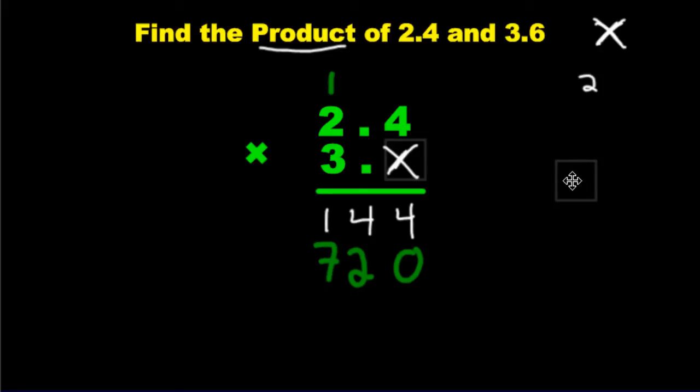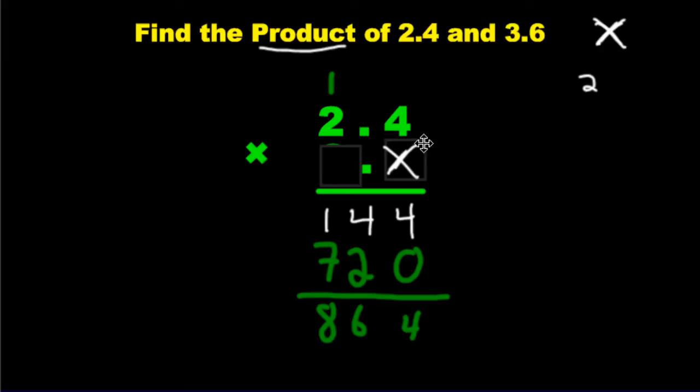That's it. We've used up both numbers on the bottom. We're done with both of these numbers. Now we can just add these two rows and get the answer. 4, 6, and 8. Now the real question is, where does the decimal go? Because we do have a decimal here. In fact, we have two decimals.